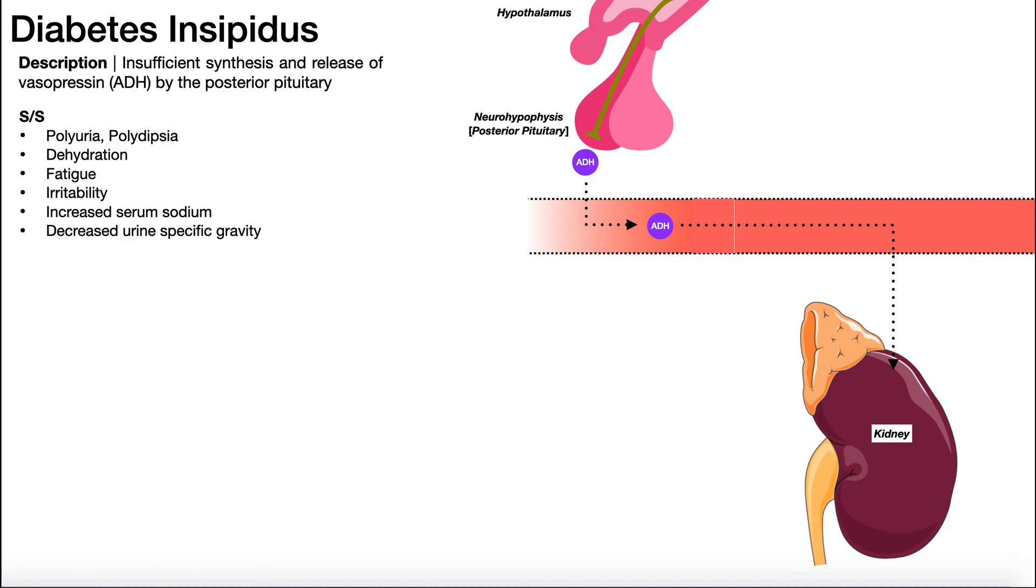Diabetes mellitus has to do with the hormone insulin. We know that in type 1 diabetes, the body has lost its ability to synthesize and make insulin. And then in type 2 diabetes, the body's lost its sensitivity to insulin. This is a different kind of diabetes.